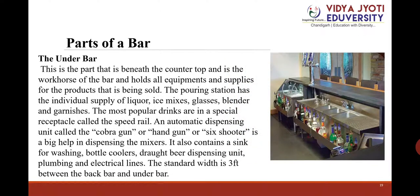The underbar: This is the part beneath the countertop and is the workhorse of the bar, holding all equipment and supplies for products being sold. The pouring station has individual supply of liquor, ice, mixes, glasses, blender, and garnishes. The most popular drinks are in a special receptacle called the speed rail. An automatic dispensing unit called the cobra gun, handgun, or six shooter is a big help in dispensing mixtures. It also contains a sink for washing, bottle coolers, draft beer dispensing unit, and plumbing and electric lines. The standard width is three feet between the back bar and the underbar.